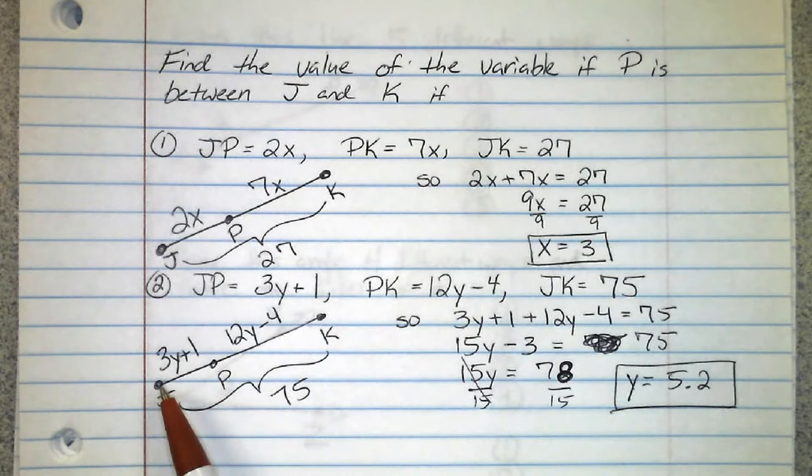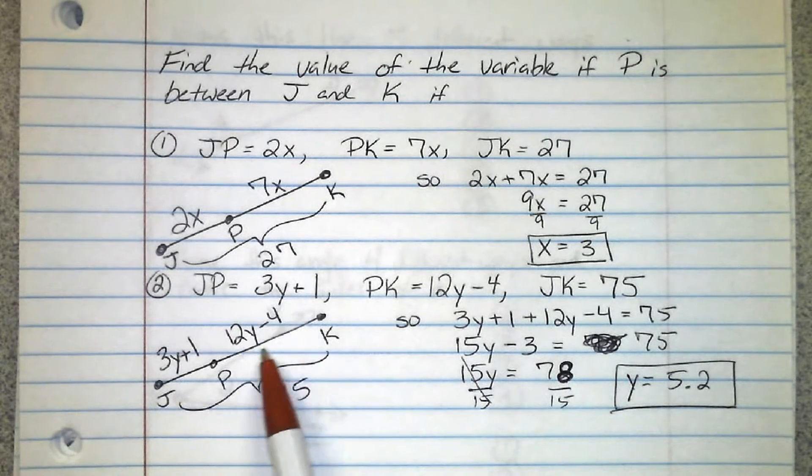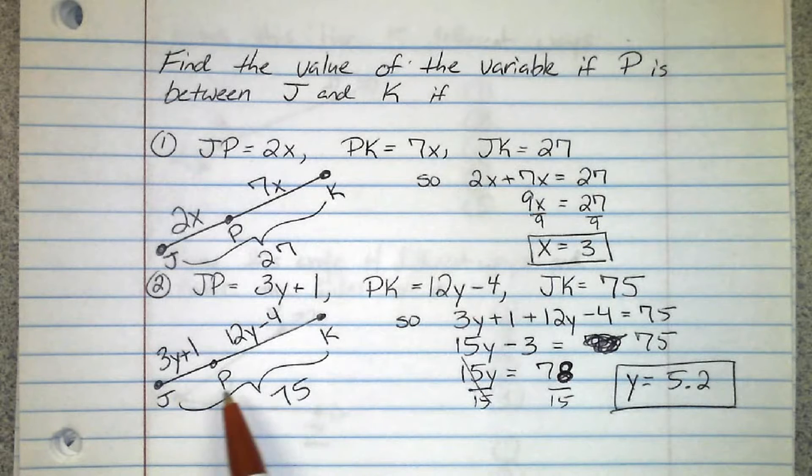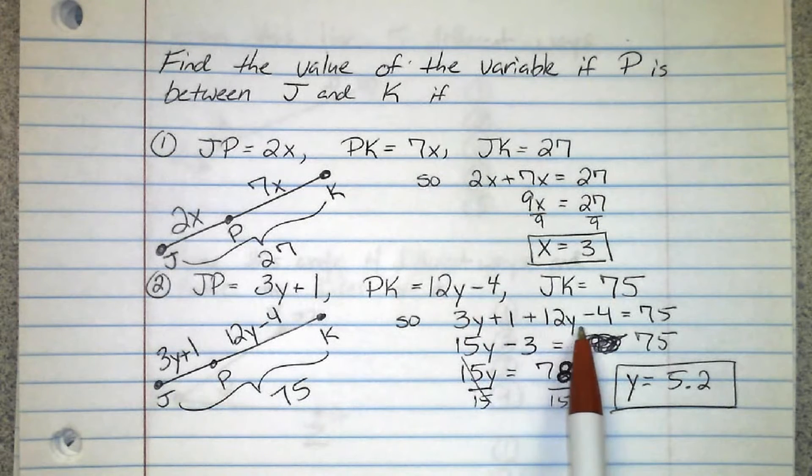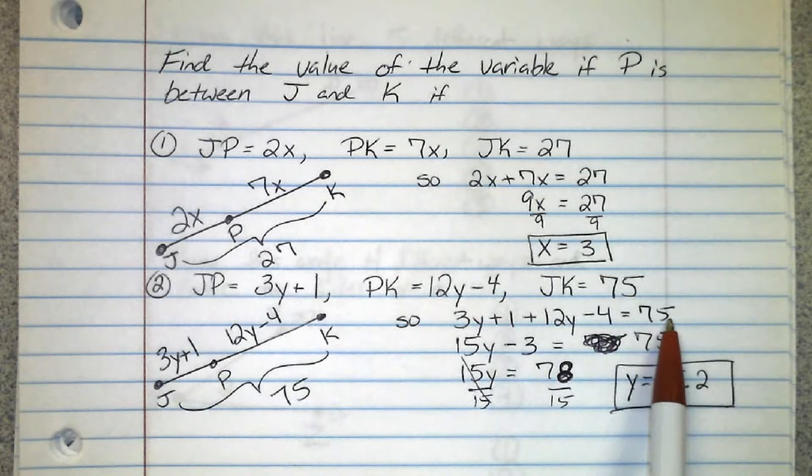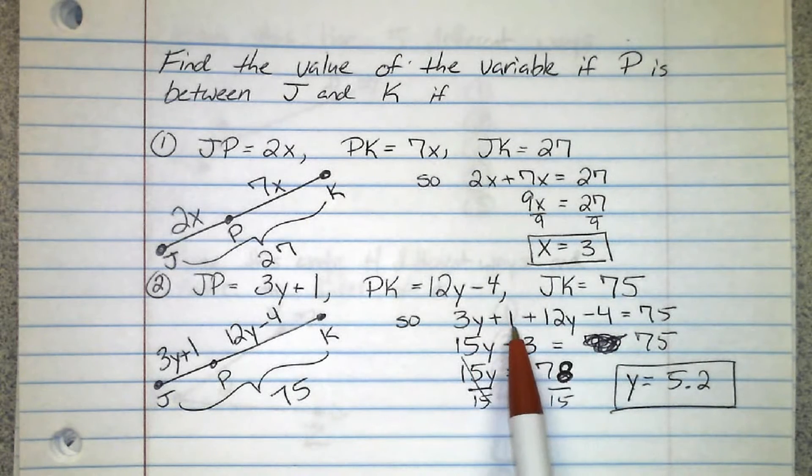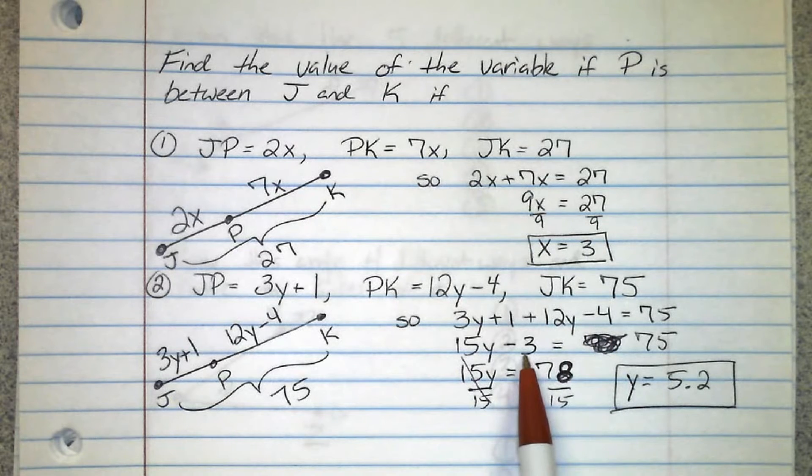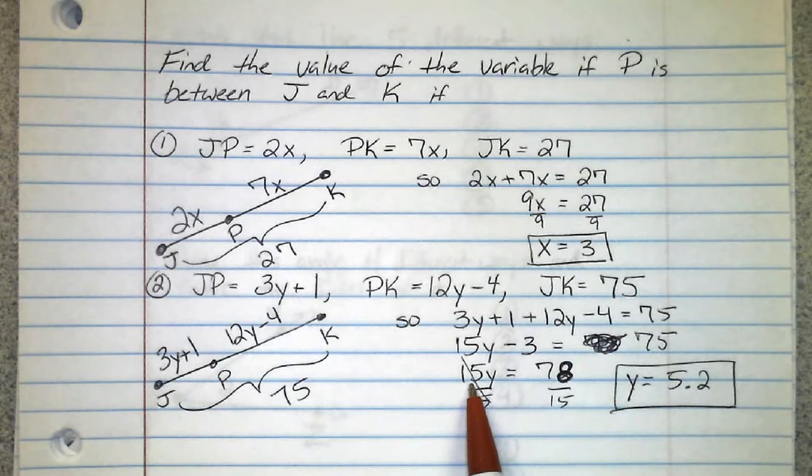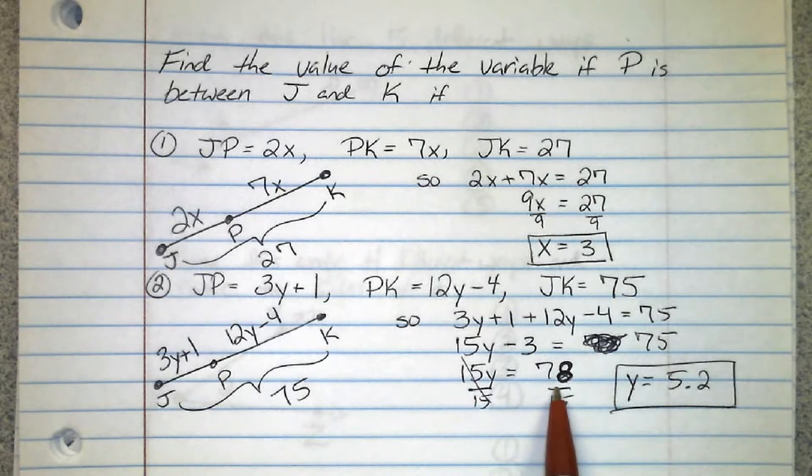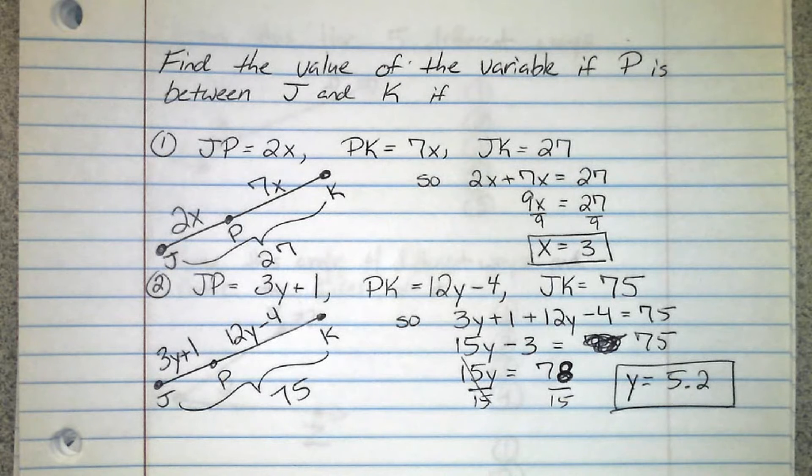For this one we set it up almost identical, except this time JP is 3y plus 1 and PK is 12y minus 4, and together they equal 75. So 3y plus 1 plus 12y minus 4 equals 75. 3y and 12y make 15y, 1 minus 4 is negative 3. I add 3 to both sides to get rid of this. Now I have 15y equals 78, divide both sides by 15, and I get y equals 5.2.